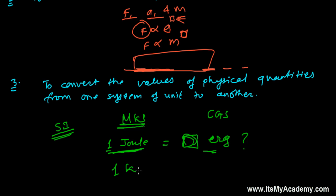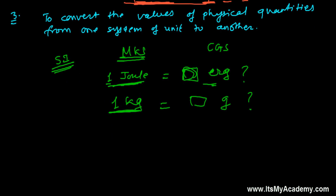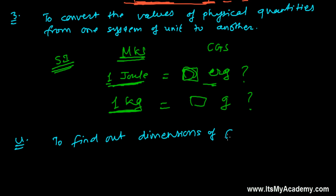For example, one kilogram equals how many grams? Such things we can convert by the help of dimensions. We'll talk later about how to do this — I will tell you one by one. And the last use of dimensional equations is to find out the dimensions of constants in a given physical equation — to find out the dimensions of a physical constant in a given physical relation.